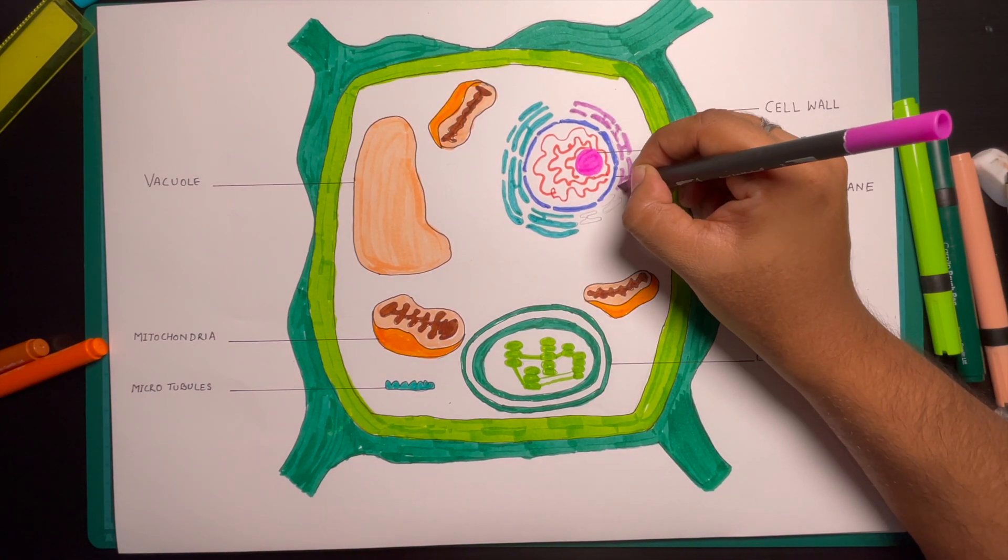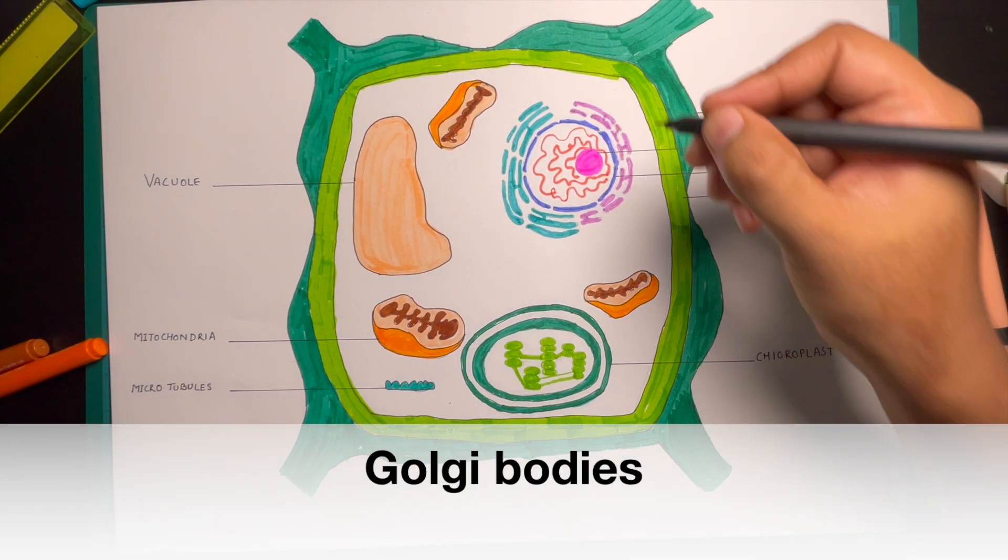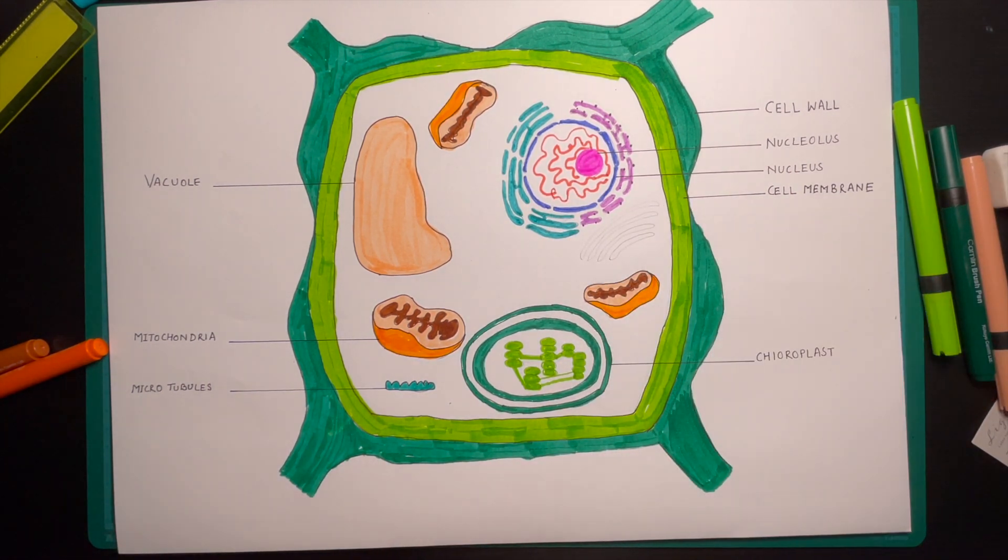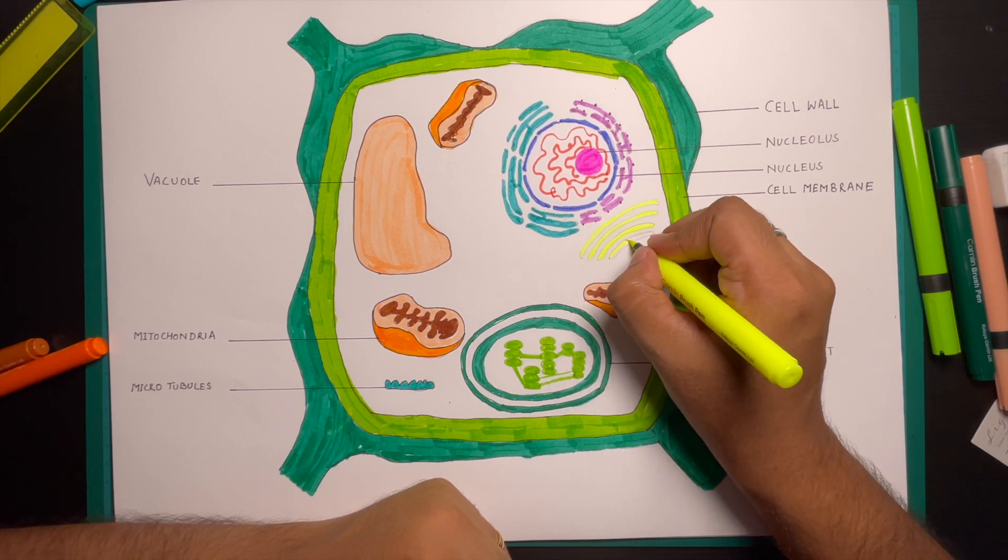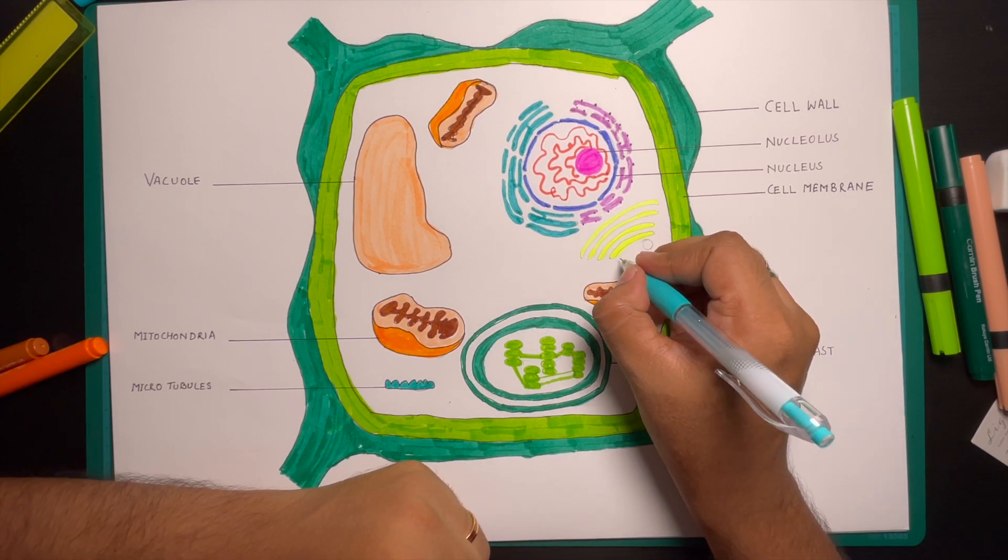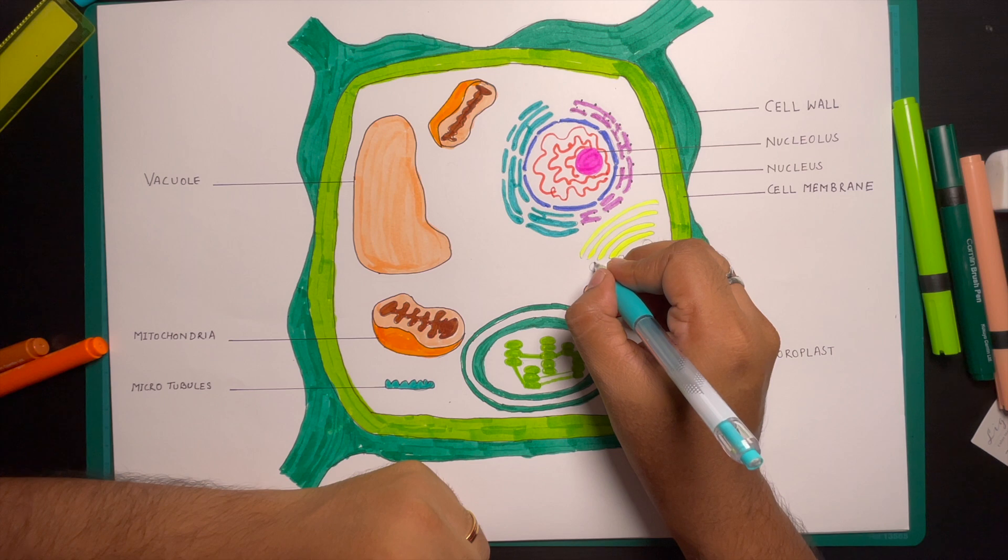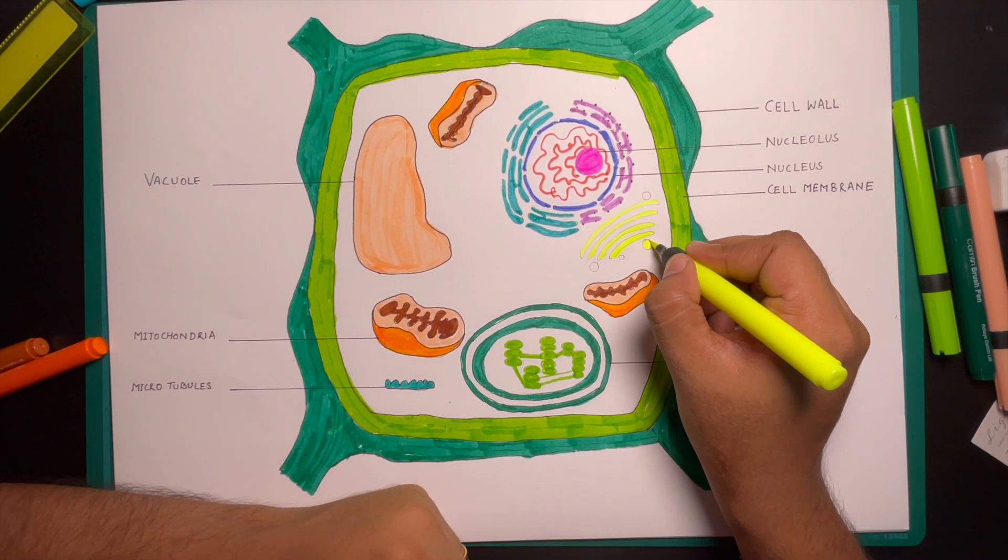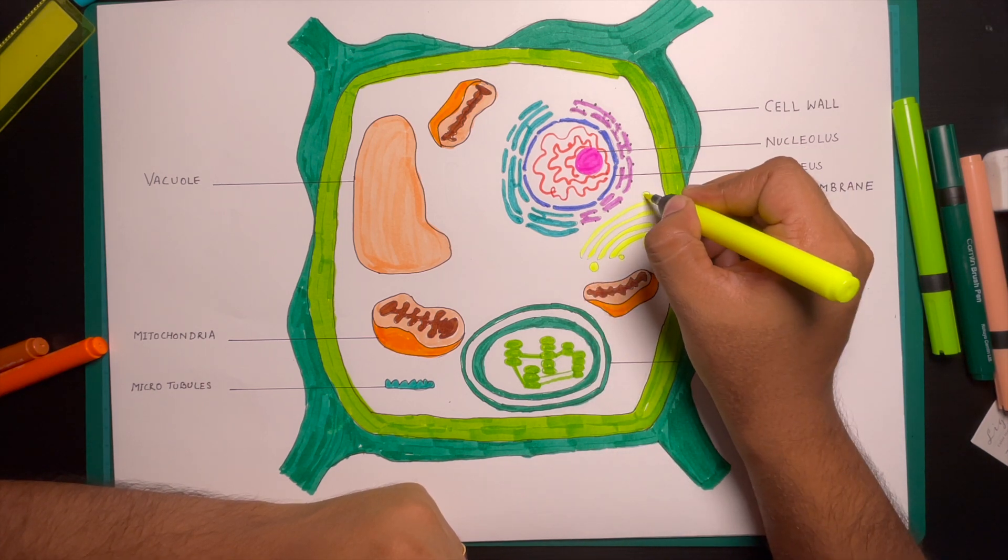The next important cell organelle of plant cells is the Golgi body. Golgi bodies or Golgi apparatus are single membrane round or cylindrically dense enclosed organelles near the nucleus that assist in secretion. Golgi bodies of a plant cell are called dictyosomes. Plant cells have hundreds of Golgi bodies.